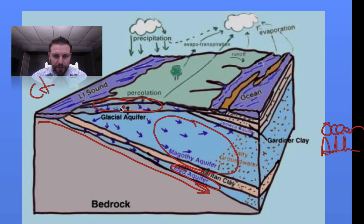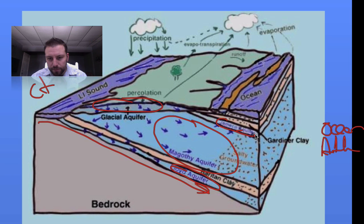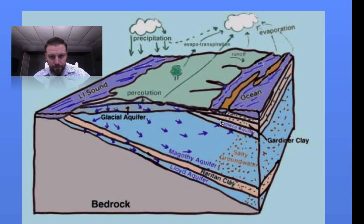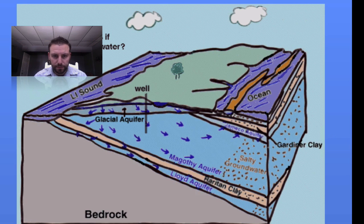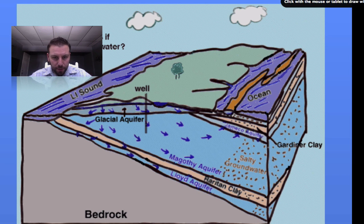Then we have our upper glacial aquifer, which is the one that supplies mostly our streams and rivers. There are two others — there's the Jameco right here — but for the most part we don't really have access to it, as it's underneath our barrier islands.